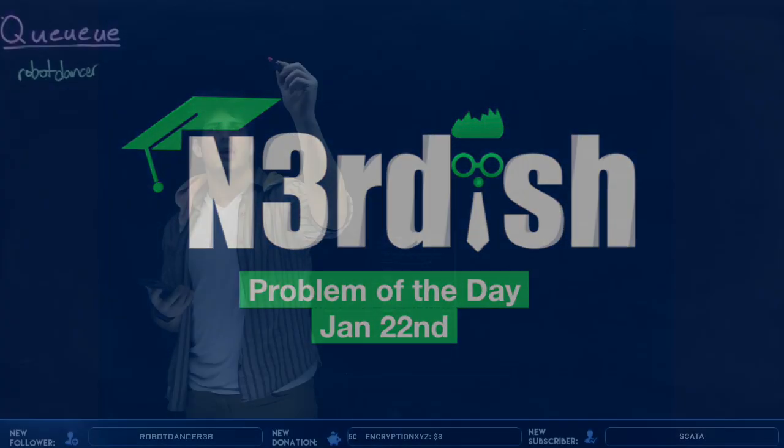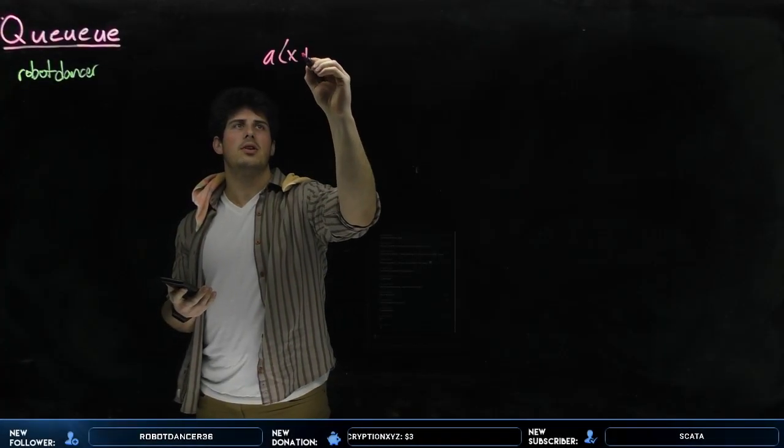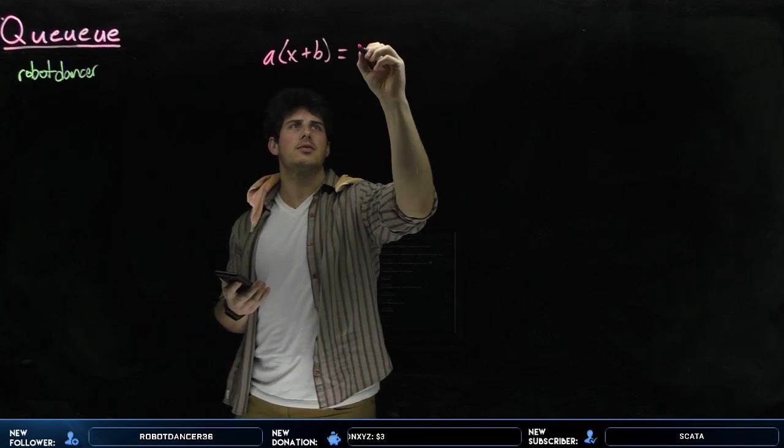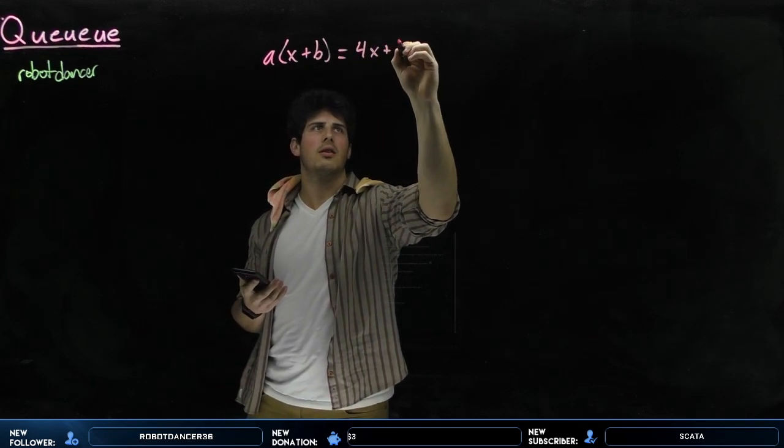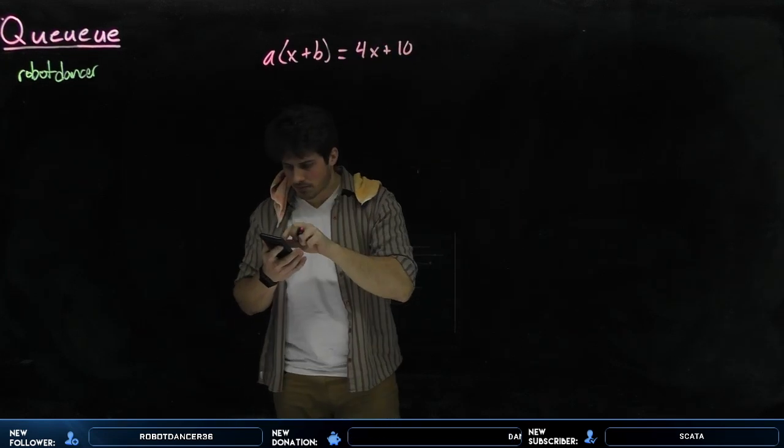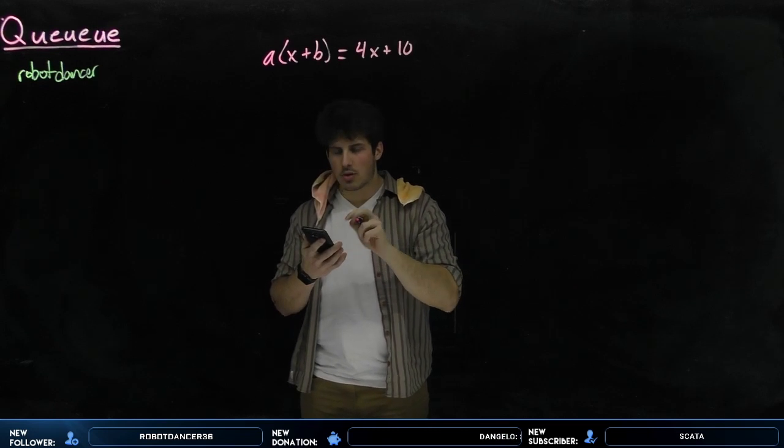In the equation above, which is a times the quantity of x plus b equals 4x plus 10, we are given that a and b are both constants.